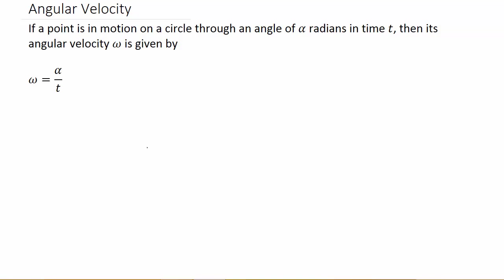Okay, so this video, let's look at the second example on angular velocity. It says if a point is in motion on a circle through an angle of alpha radians in time t, then its angular velocity omega is given by omega equals alpha over t.